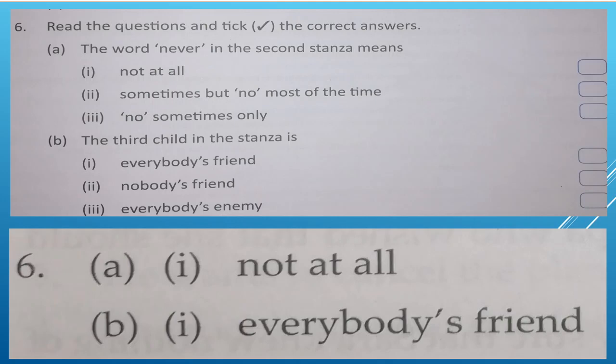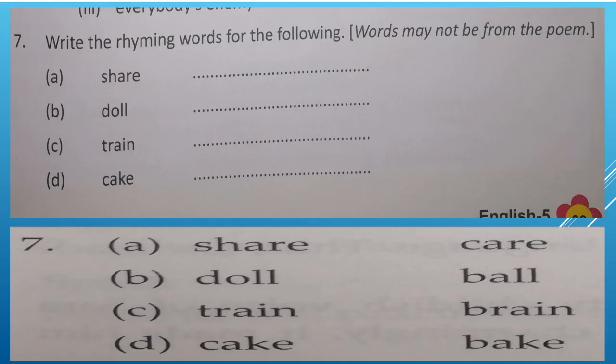Next, rhyming words are given. You can write them yourself — the words don't have to be from the poem. For example: share–care, doll–ball, train–brain, cake–bake. Rhyming words are words whose ending sounds match.